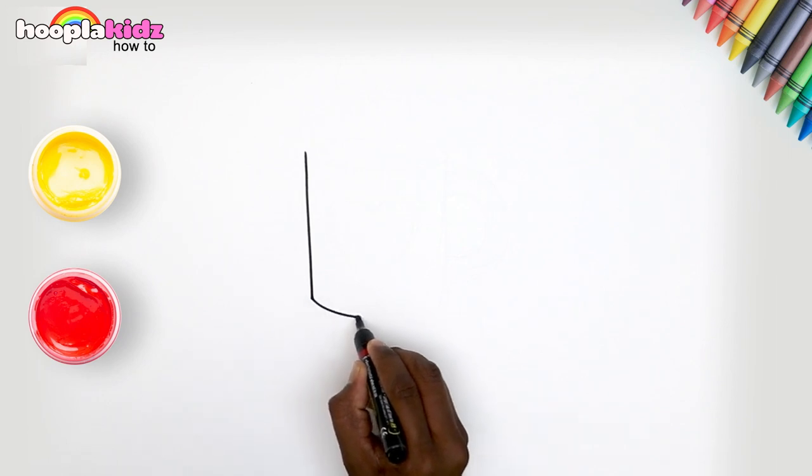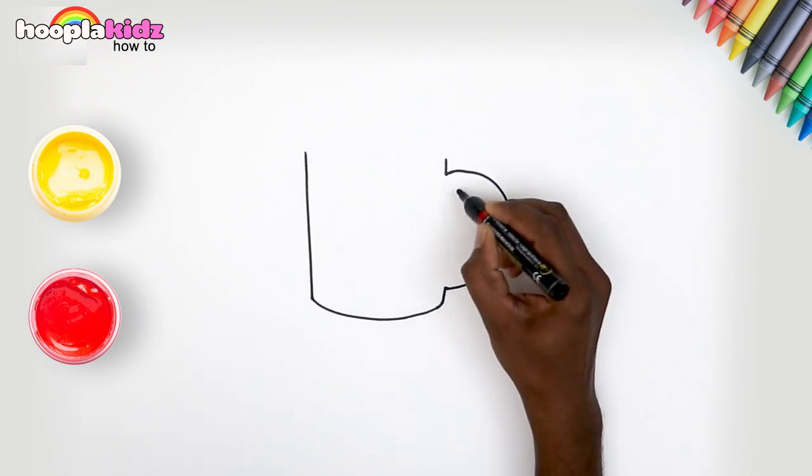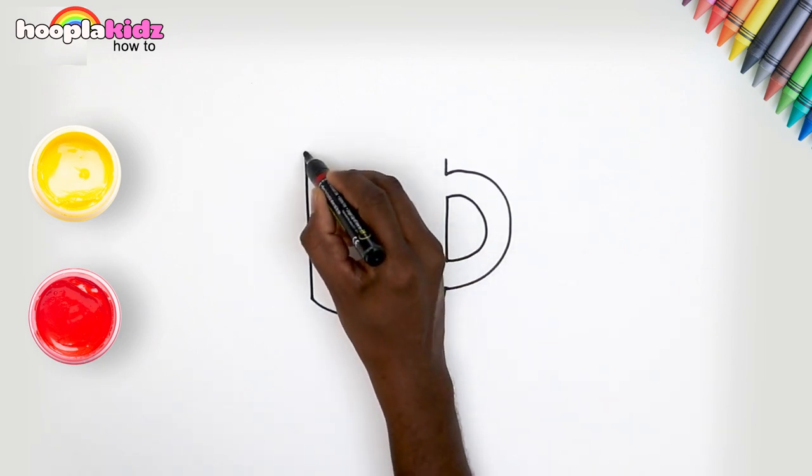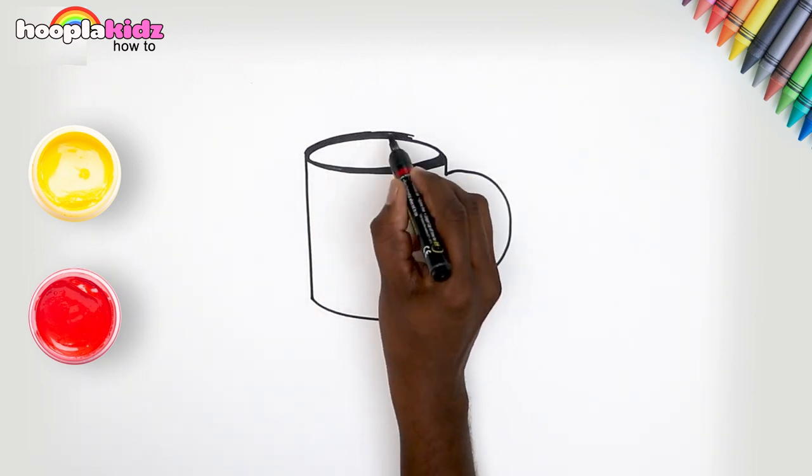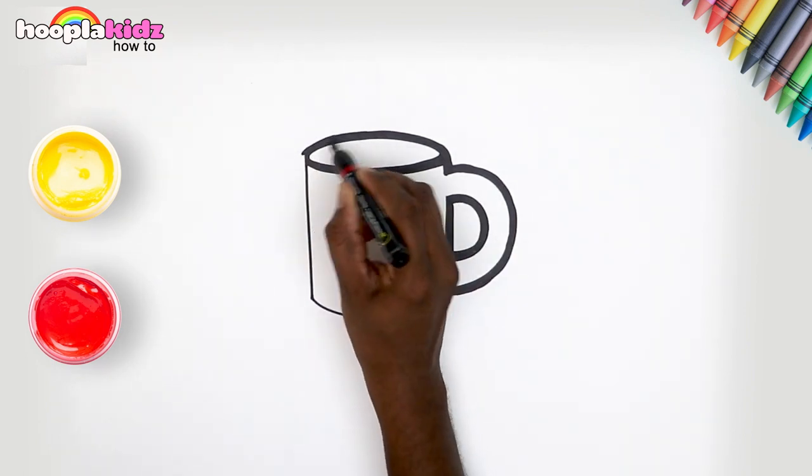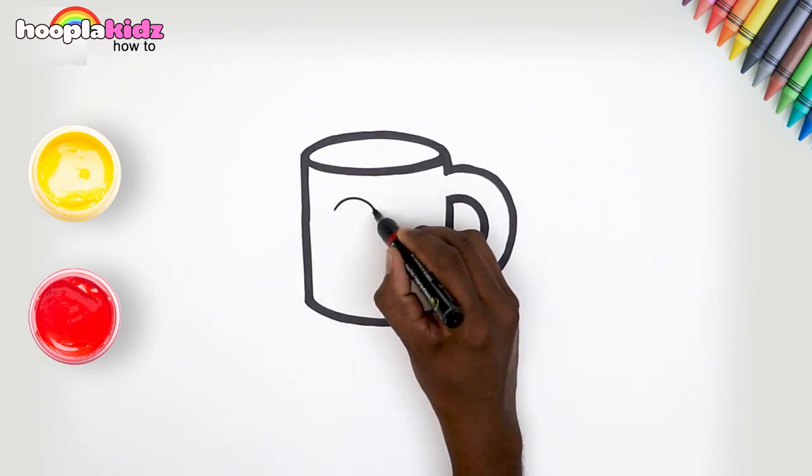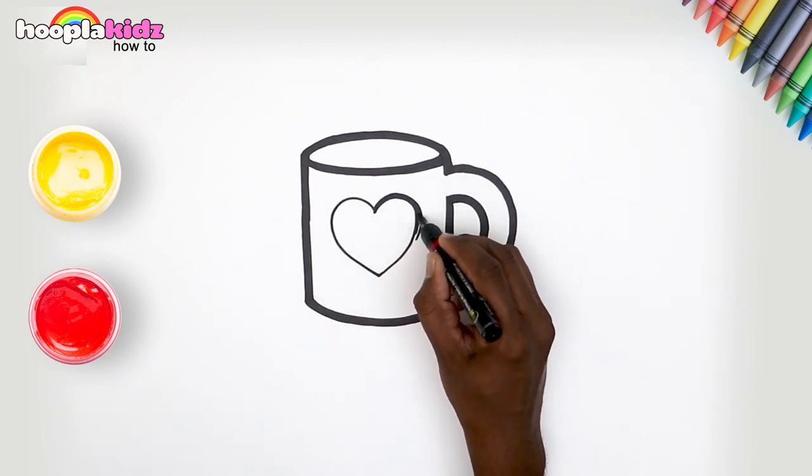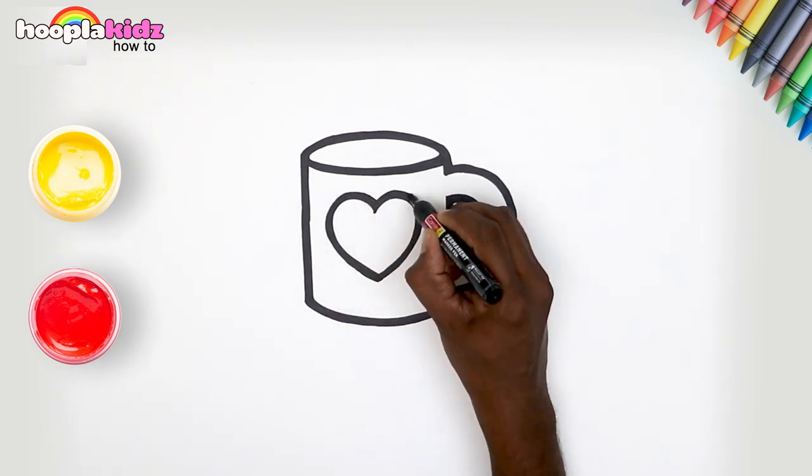Let's draw a super easy mug today. Start with a straight line. Then connect with a curvy line. And a reversed C for the handle with a D inside. How simple was that? Let's complete with an oval shape on top. Yay! Time to add a nice and neat outline. Looks great. Let's add a heart on our mug. Just like that. It looks so cute now, doesn't it?